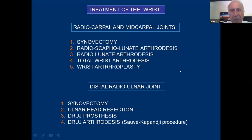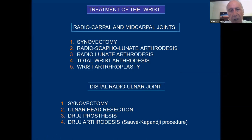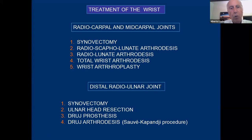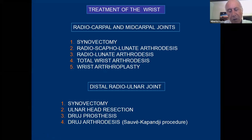What about the treatment of the wrist? We can treat the radiocarpal and midcarpal joints, and we may also have to treat the distal radio-ulnar joint. The involvement may not be the same, so it's not necessary to combine both treatments. For the radiocarpal and midcarpal joints we can do a synovectomy, a radioscapholunate arthrodesis, a radiolunate arthrodesis, a partial wrist arthrodesis, a total wrist arthrodesis, or a wrist arthroplasty — depending on the type of destruction. For the distal radio-ulnar joint we can do synovectomy, ulnar head resection, prosthesis, or arthrodesis.